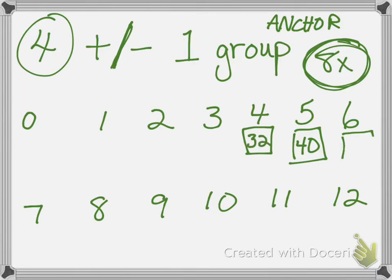What if I want to know what six times eight is? I know five times eight is 40, and this one's super easy to add: 40 plus eight is 48. So when you're doing this and throwing numbers around in your head, remember — if you're trying to figure out eight times tables, you have to add and subtract groups of eight.